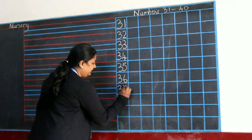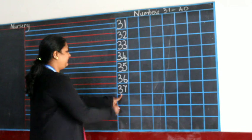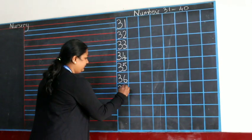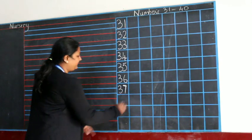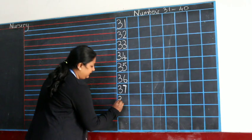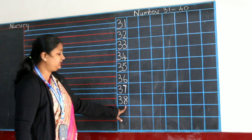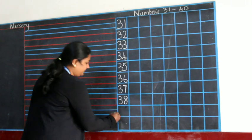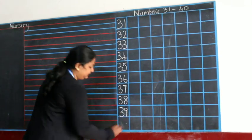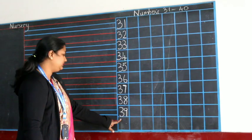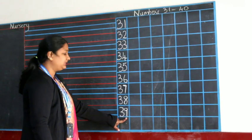3, 7, 37. 3, 7, 37. 3, 8, 38. 3, 8, 38. 3, 9, 39. 3, 9, 39.